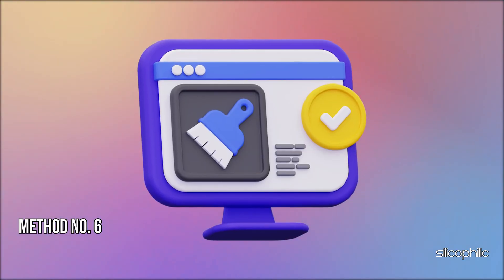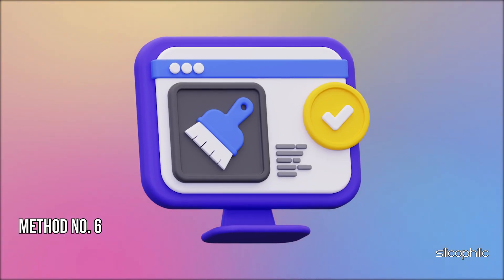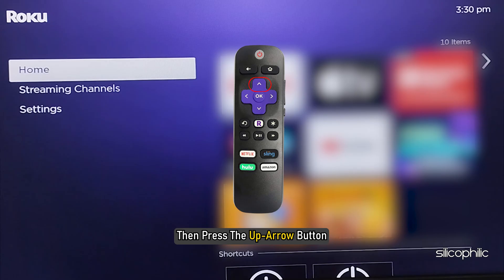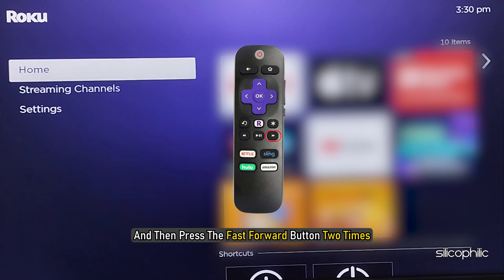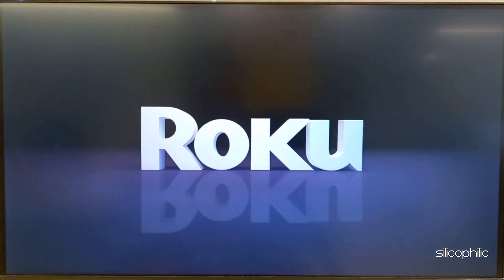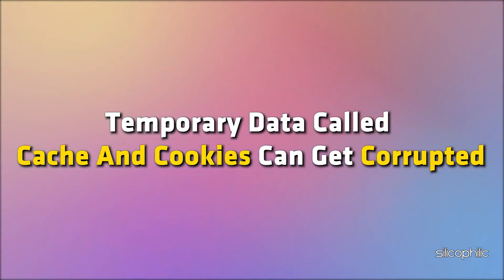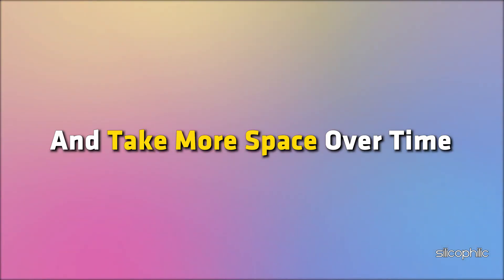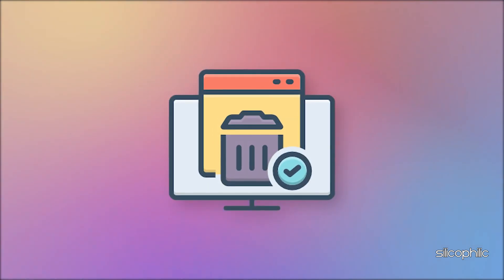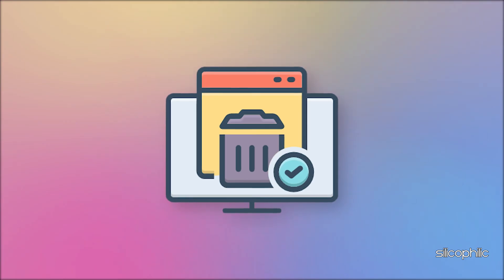Method 6: Clear your cache and data. From the home screen, press the home button on the remote 5 times, then press the up arrow button. Now press the rewind button twice and then press the fast forward button 2 times. Wait for Roku to restart. Temporary data like cache and cookies can get corrupted and take up more space over time, causing unexpected issues. This process clears the cache on Roku TV and helps prevent additional problems.